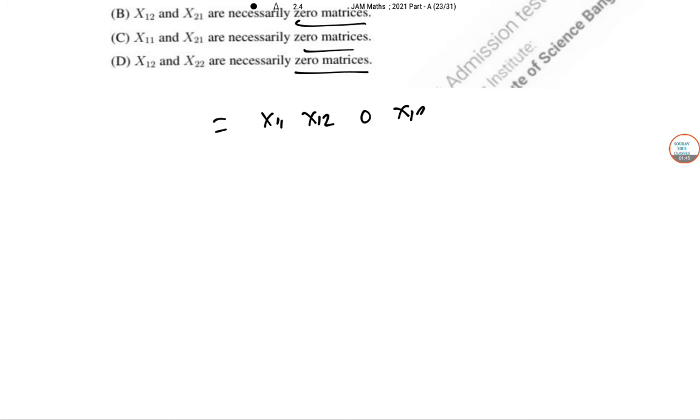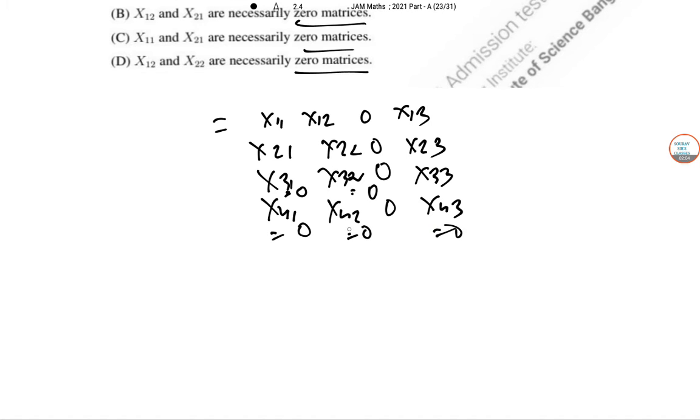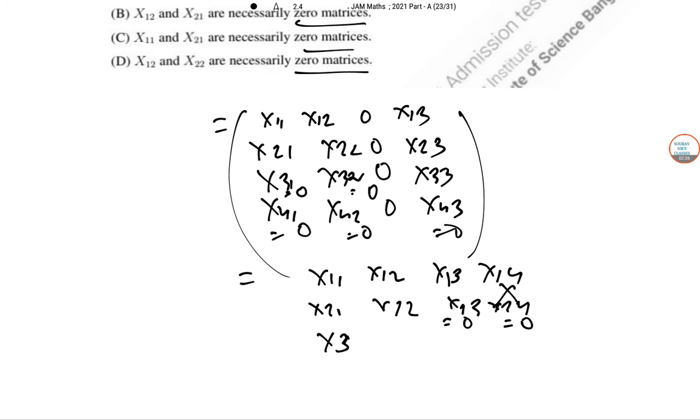So, this is X11, X12, zero, X13, X21, X22, zero, X23, and so on through X41, X42, zero, X43. After multiplying, this equals zero, this equals zero, all these equal zero. So, only X12 is surviving. And that's it. So, X12 and X21 are zero.